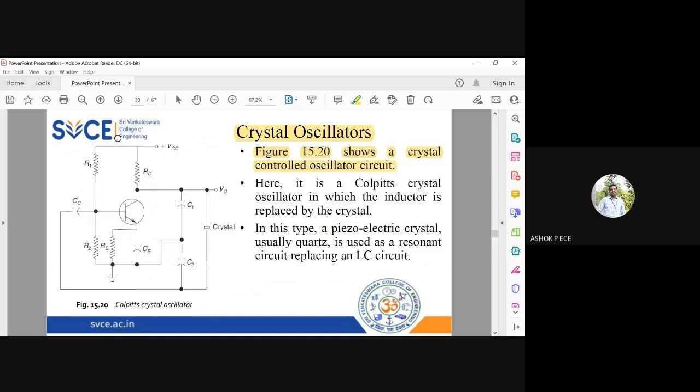When the inductor in a Colpitts oscillator is replaced by a crystal, it becomes a Colpitts crystal oscillator.